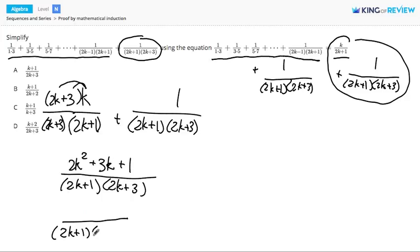So the denominator will stay the same. But in the numerator, I'd like to factor. Now the only way to multiply to get 2k squared is 2k times k, and the only way to multiply to get 1 with all positive numbers is 1 times 1.